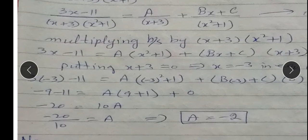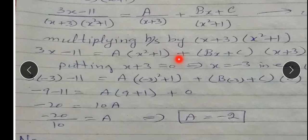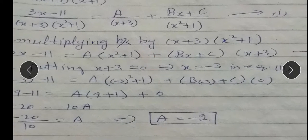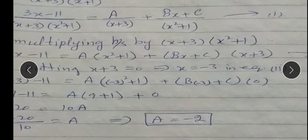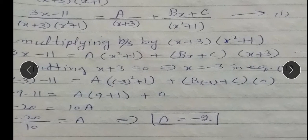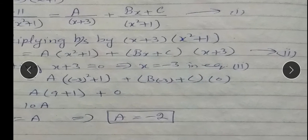Left side hamare paas rahega: 3x minus 11 is equal to A into (x²+1) — factor (x+3) cancel out — plus (Bx+C) into (x+3) — yahan (x²+1) cancel hoga. Yeh equation number 2 ho jayegi.